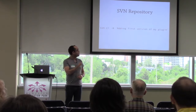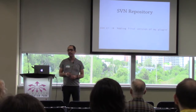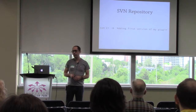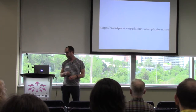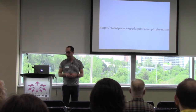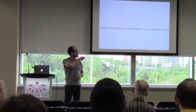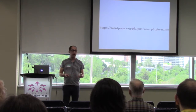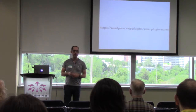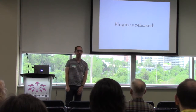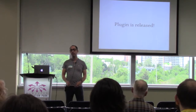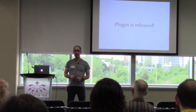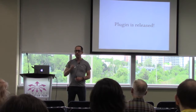Then type 'svn ci' — just like commit ('co' was already taken for checkout) — with '-m' and a message like 'first version of my plugin.' Once you do that, you can go to wordpress.org/plugins/your-plugin-name and it should show up within a few minutes. At that point, your plugin is released — you can tell anyone in the world to go to their WordPress site, go to Plugins > Add New, search for your plugin, and click install and activate.